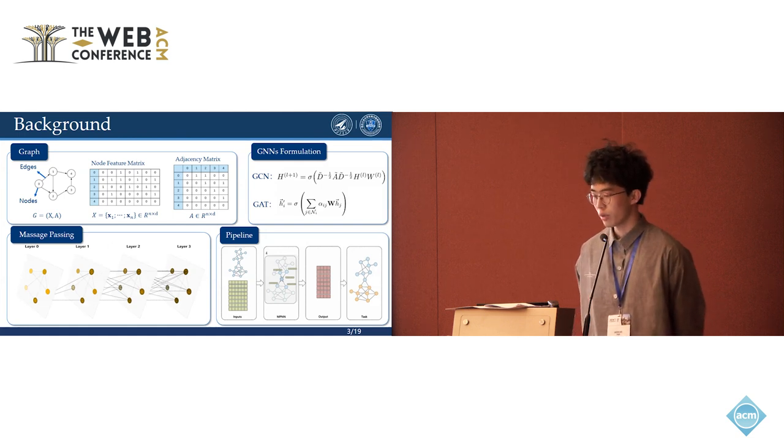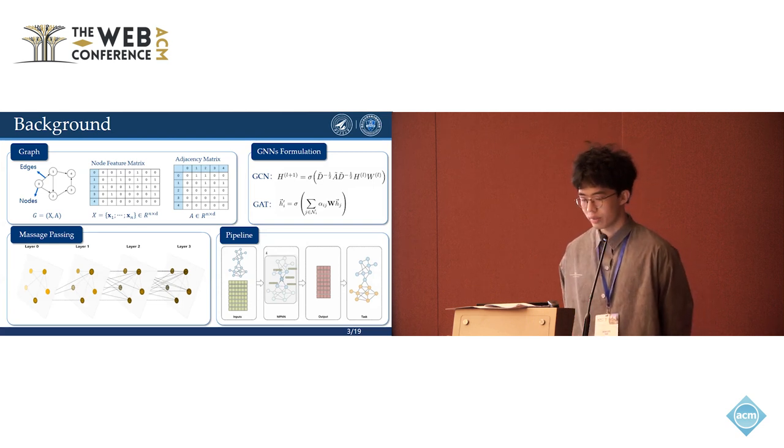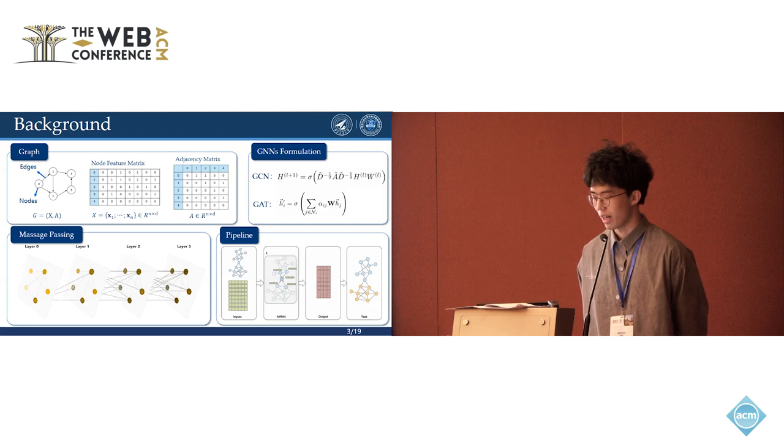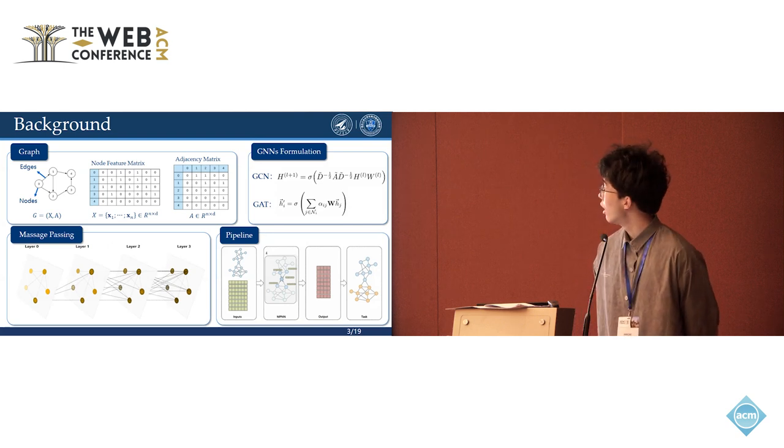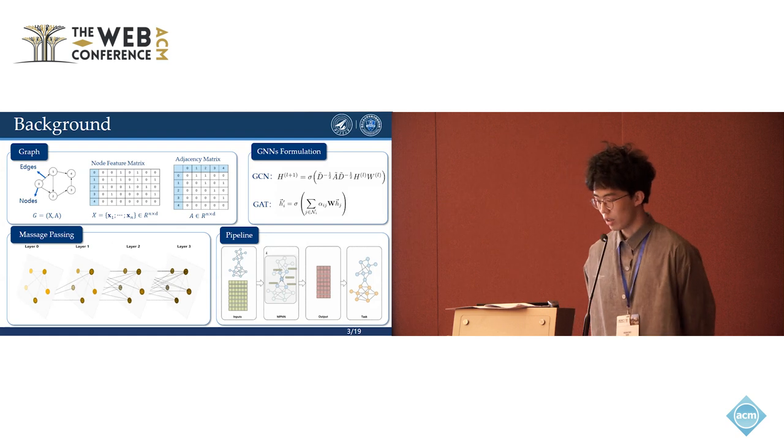Their forward propagation information is on the top right corner. There are also many other GNN architectures. They are all based on message passing mechanism and have a general pipeline, as shown on the bottom of the slides.